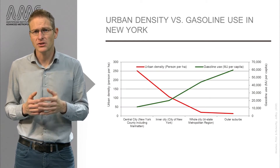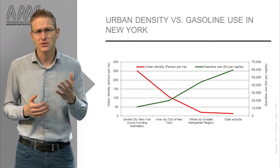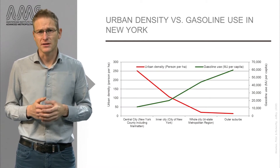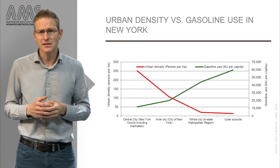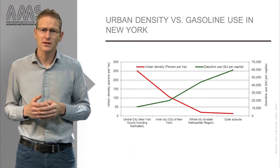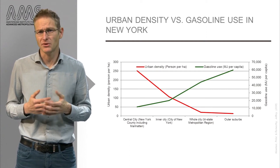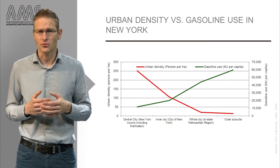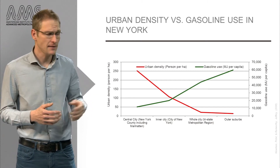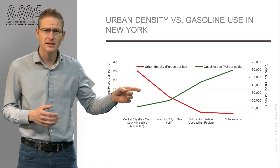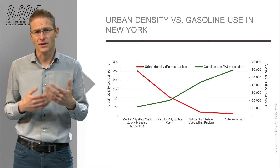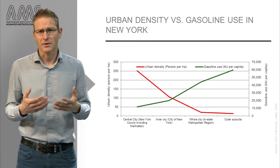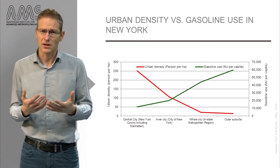A similar relationship has been suggested for transport, which is more efficient in dense cities because distances are shorter and alternative modes of transport can be used. This can be seen here in the example of New York City, where the red line shows density declining to the outer suburbs and the energy used per capita goes up.